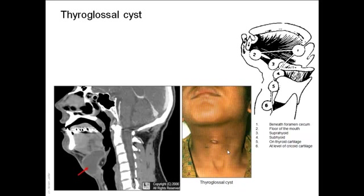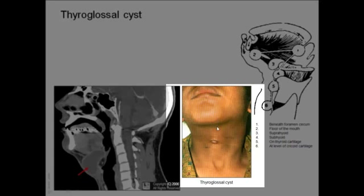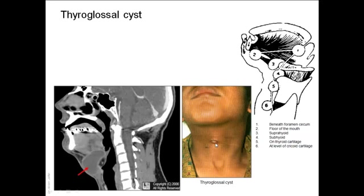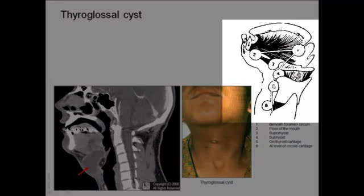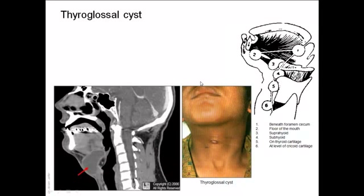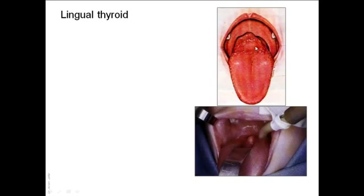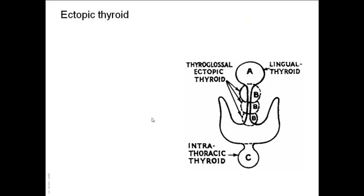If the thyroglossal duct fails to disappear, part of it will remain and may become cystic, resulting in a thyroglossal cyst — usually in the midline of the neck. This cyst is connected to the dorsum of the tongue, which is why it moves upwards when the tongue is protruded, a characteristic feature of the thyroglossal cyst. Sometimes the thyroid gland fails to descend, forming a lingual thyroid. An ectopic thyroid may appear between the foramen cecum and the normal position, or the gland may descend too far and be found in the superior mediastinum as an intrathoracic thyroid.